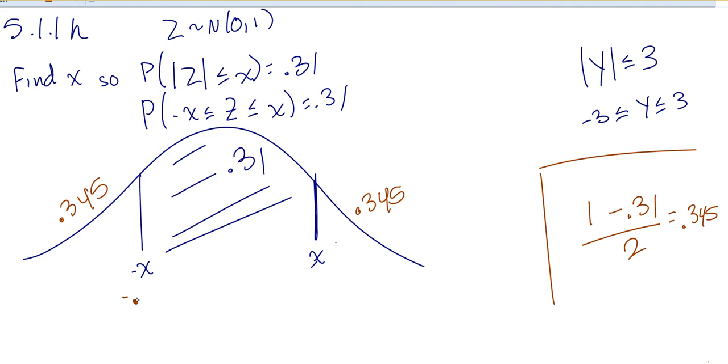So that negative 0.40 is this negative X value. And then by symmetry, this would have to be positive 0.40.